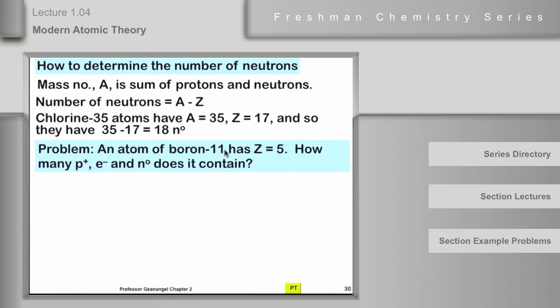So here's a problem. An atom of boron 11 has Z is equal to 5. How many protons, electrons, and neutrons does it contain? So the place to start is the atomic number, because the atomic number tells us two things. If Z is equal to 5, then there are 5 protons and 5 electrons. That's what Z is equal to 5 means to us. Now it's boron 11 that they're asking us about, so the mass number, A, is equal to 11. That's what goes right here. Boron 11 has a mass number of 11. So the number of protons is 5. The total number of protons and neutrons is 11. So 11 minus 5 equals 6 neutrons. So 5 protons, 5 electrons, 6 neutrons.